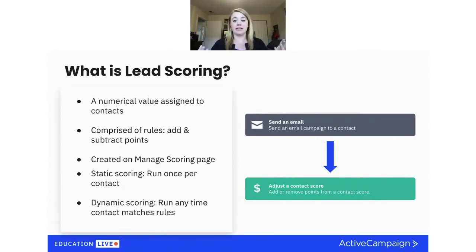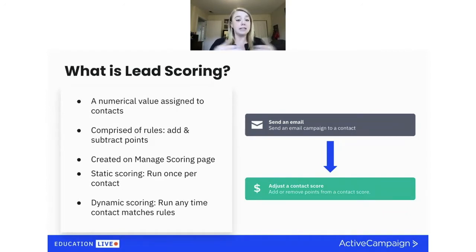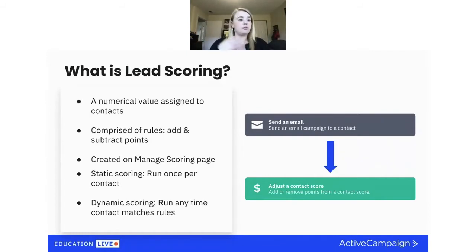For example, you want to give someone 10 points if they're in your city, and another 10 points if they look at your pricing page. If someone did both of those things, they would have 20 points. You decide those kinds of choices.